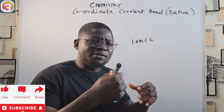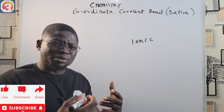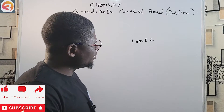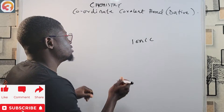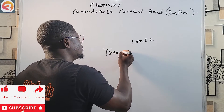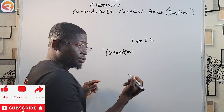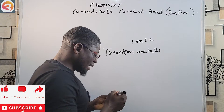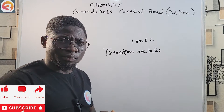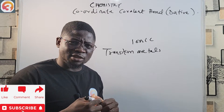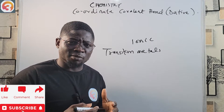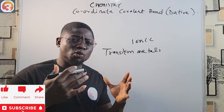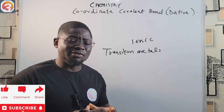One thing you should note is that this coordinate covalent bond formation resembles that of the ionic or electrovalent bond, because in ionic bond formation there is transfer of electron from one atom to the other — similarly, in coordinate covalent bond it is one of the two atoms that donates the shared pair. Transition metals are also a good candidate for dative bond formation.